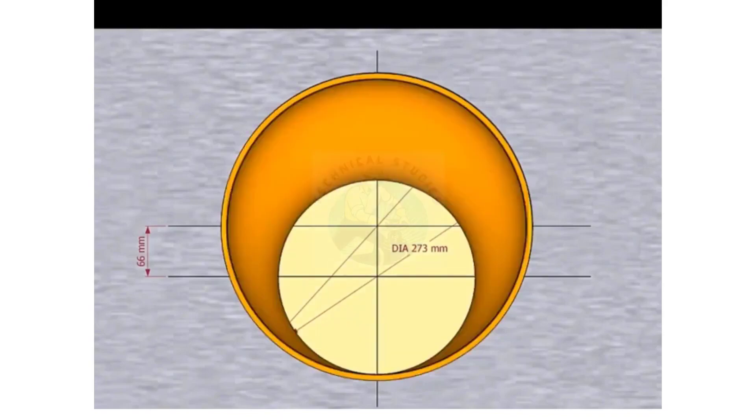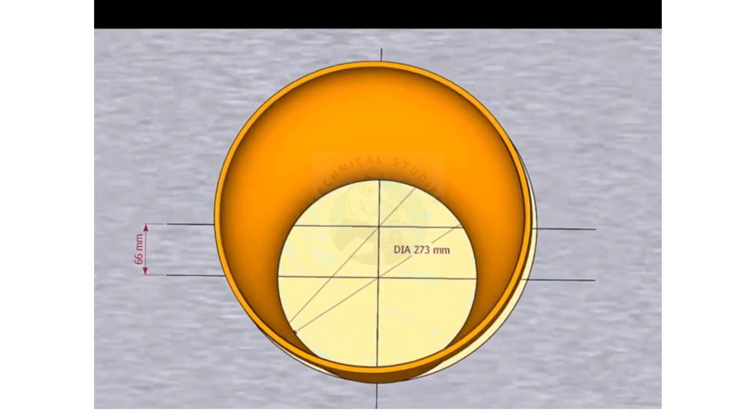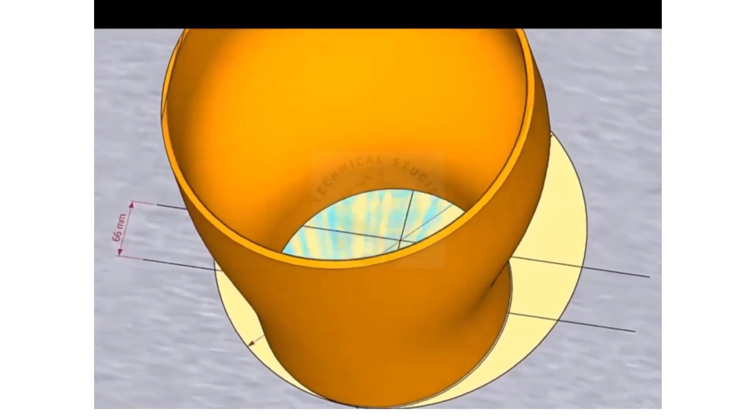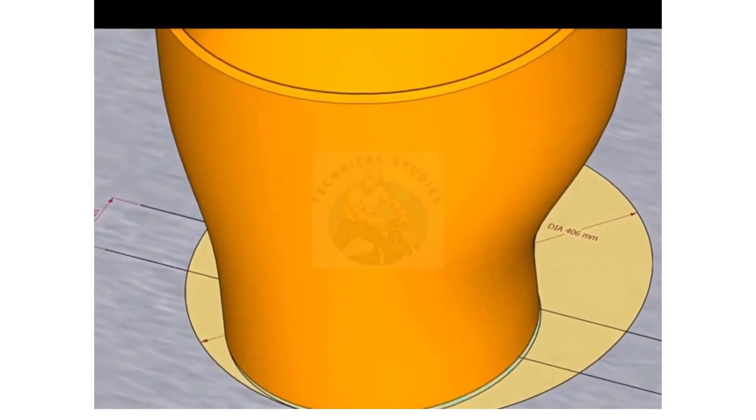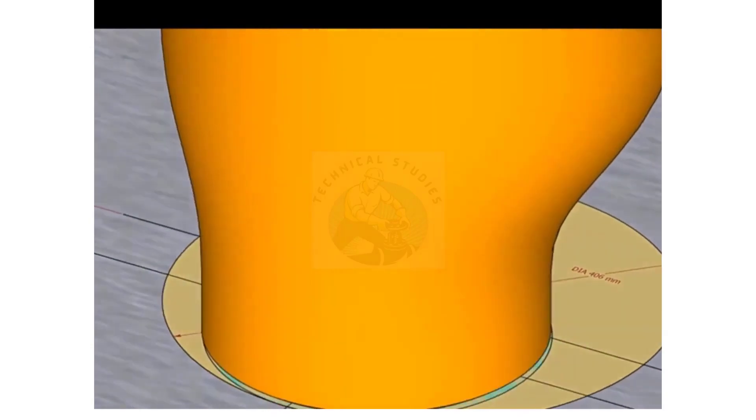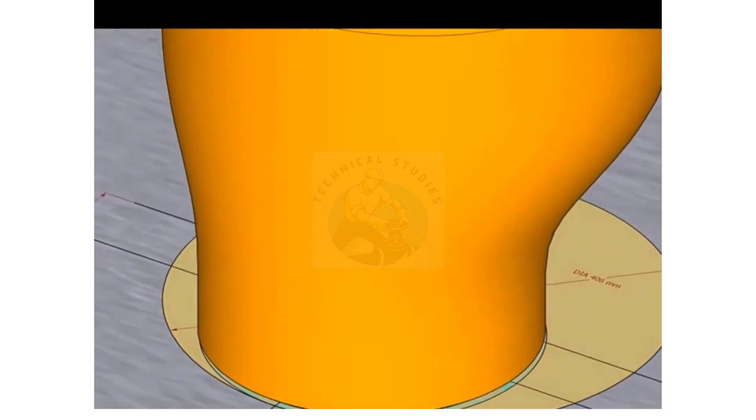Place the reducer on the layout, facing the small end down. Inspect carefully if the reducer sits on the circle correctly.